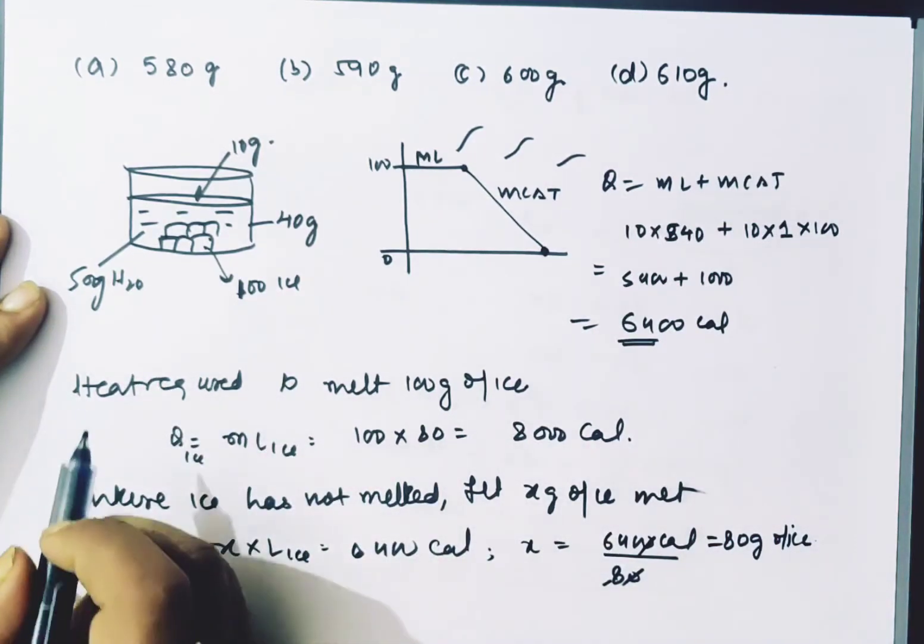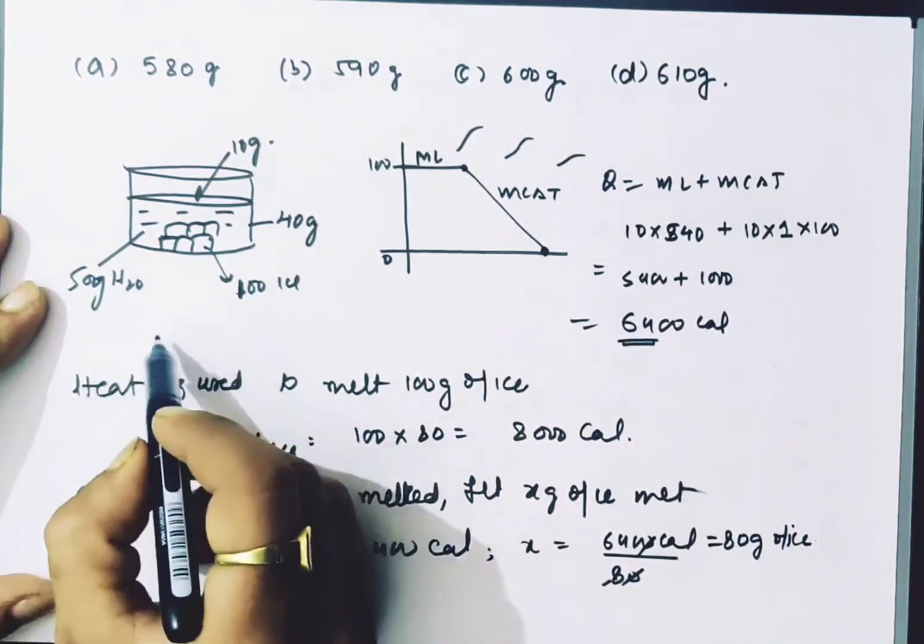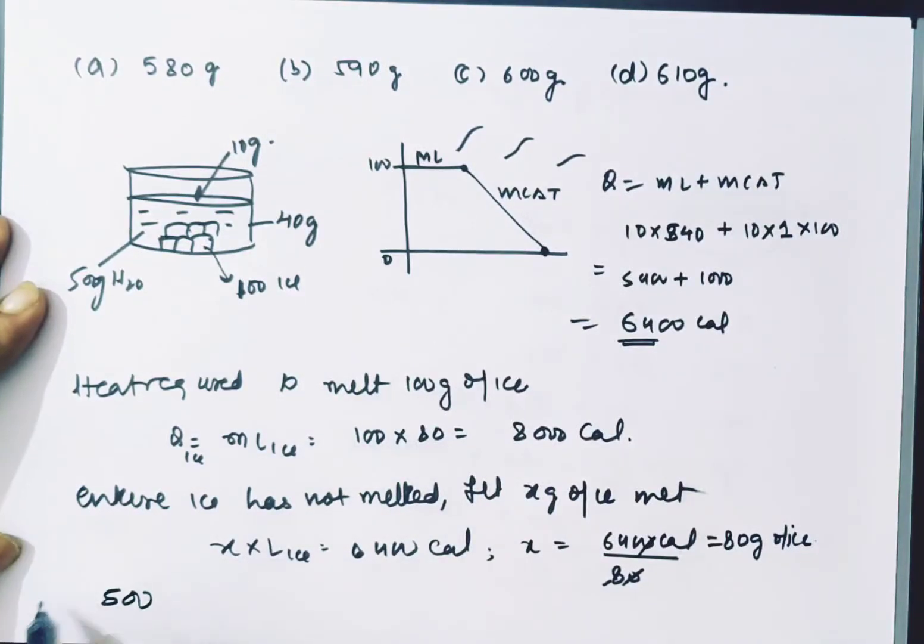So now how much water do we have? We had 500 grams of water before, plus 80 grams from melted ice, and 10 grams from steam. So we have 590 grams of water now in the mixture.